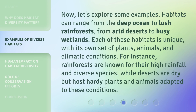Now, let's explore some examples. Habitats can range from the deep ocean to lush rainforests, from arid deserts to busy wetlands. Each of these habitats is unique, with its own set of plants, animals, and climatic conditions. For instance, rainforests are known for their high rainfall and diverse species, while deserts are dry but host hardy plants and animals adapted to these conditions.